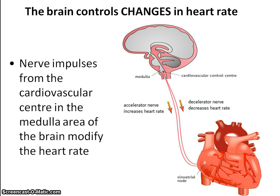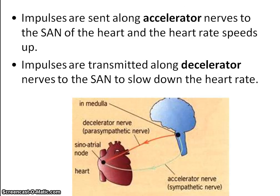Modifying the heart rate is controlled by the brain. The cardiovascular center in the medulla area of the brain brings about changes to the heart rate. Nerve impulses travel along the accelerator nerves to the SAN to speed it up, or along decelerator nerves to the SAN to slow down the heart rate. Accelerating nerves used to be known as sympathetic nerves; decelerating nerves used to be known as parasympathetic nerves.